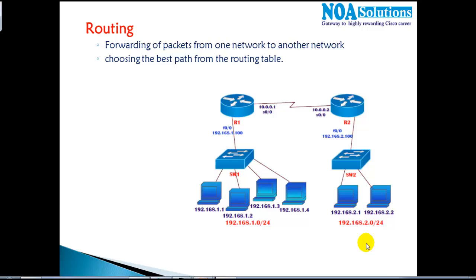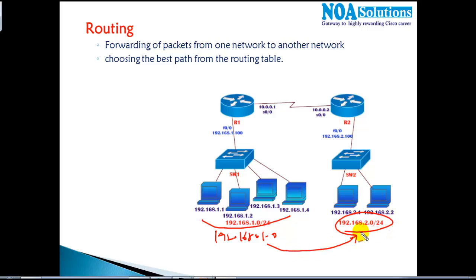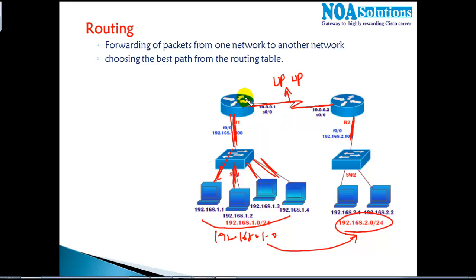Routing is the process of forwarding packets from one network to another. Here we have a 192.168.1.x network and we want it to communicate with the 2.x network. We set up LAN connections, connected all the computers, and got a WAN link up — but even with all that connectivity in place, the router will still not forward packets from the 1.x network to the 2.x network.